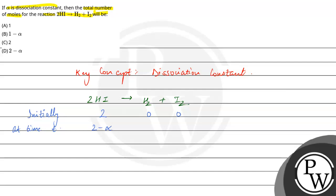Now what will come here? Hydrogen will come to alpha by 2 and iodine will come to alpha by 2. Why?